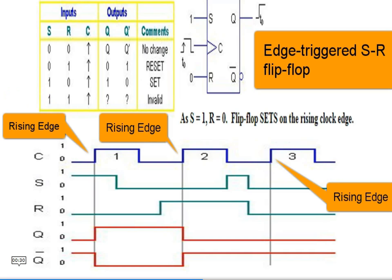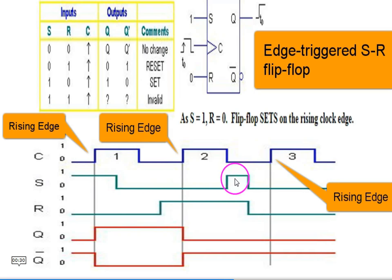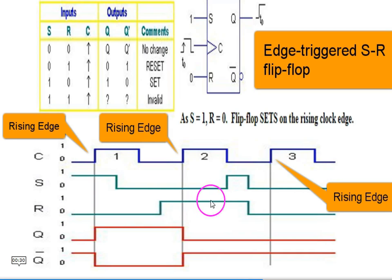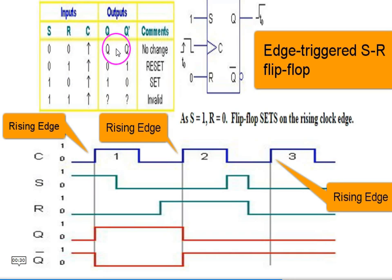Let's assume we have the S input going up and down — this is arbitrary, you may choose differently — and let's choose the R input of this shape. We know the relation between inputs and outputs of the clocked RS flip-flop.